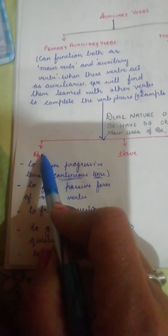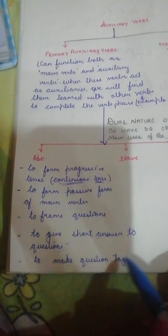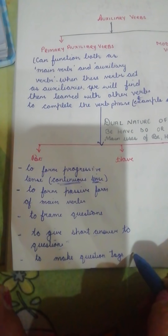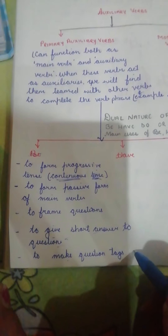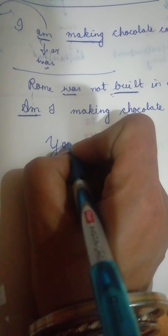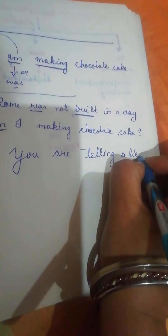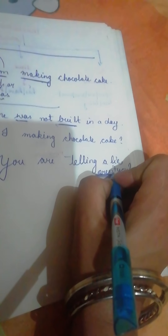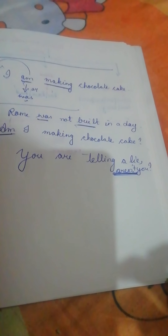Finally, BE is used to make question tags. For example: 'You are telling a lie, aren't you?' The question tag 'aren't you' comes from the BE family. Please go through the notes provided along with this video or in the worksheet, and try to do the questions given there. Bye.